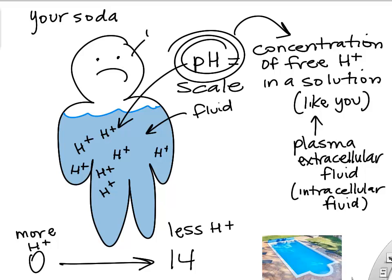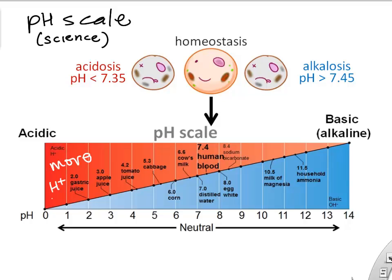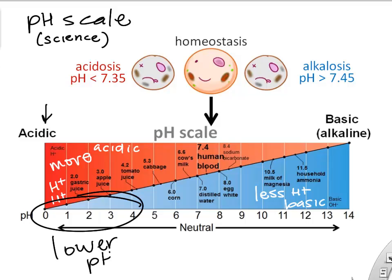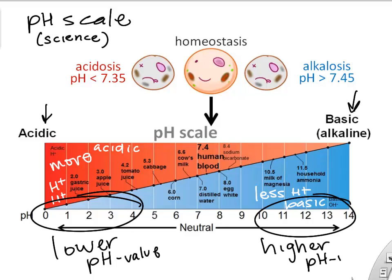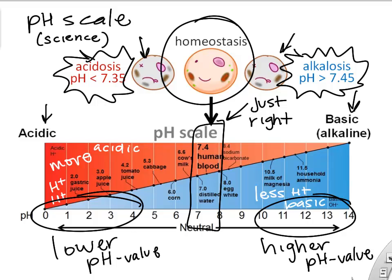The pH is a scientific scale from 0 to 14 that tells us how acidic or how basic a fluid is. The lower the pH number, the more hydrogen ions you have and the more acidic you are. The less hydrogen ions, the more basic, and the higher the number. Your cells like to live at about pH 7.4 to 7.5 to stay happy.